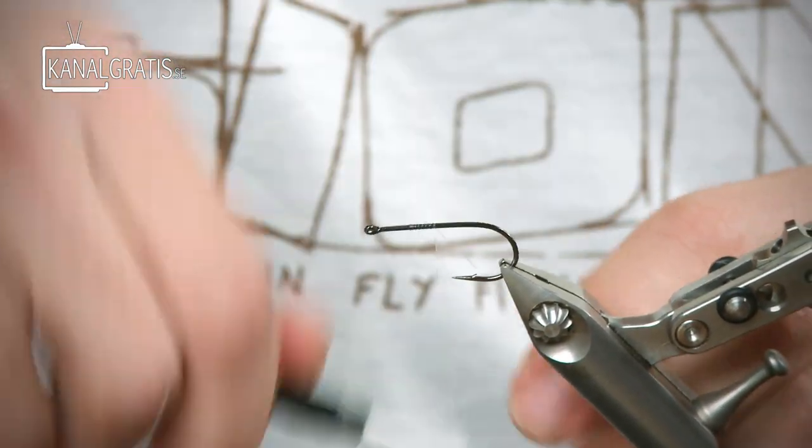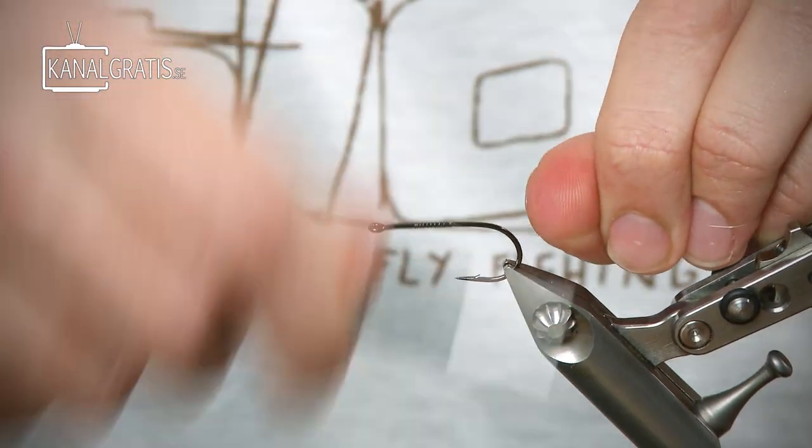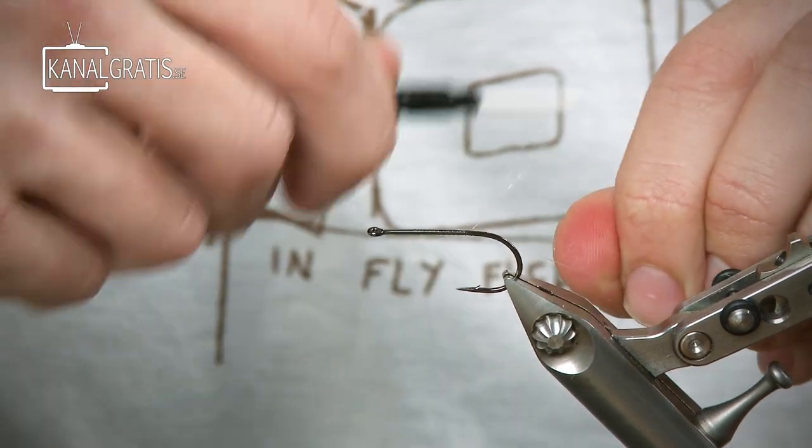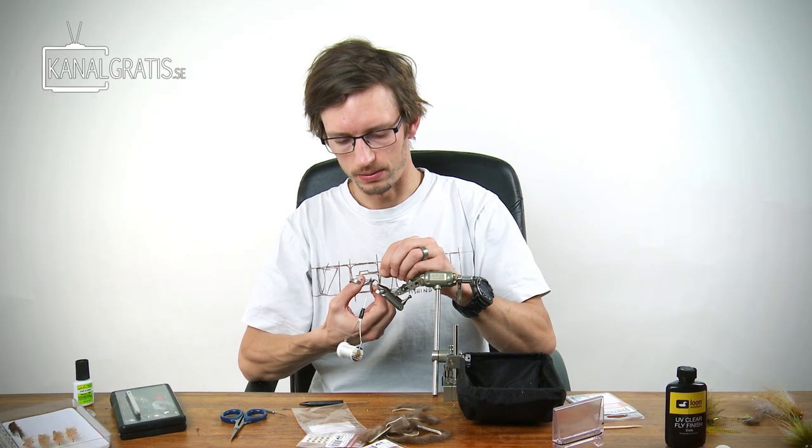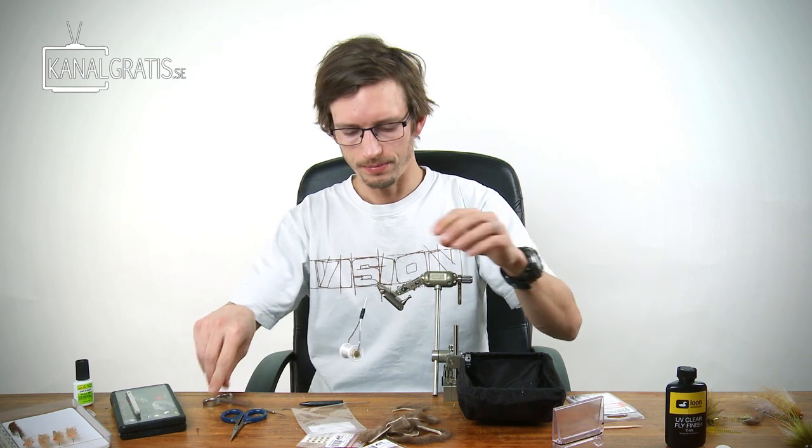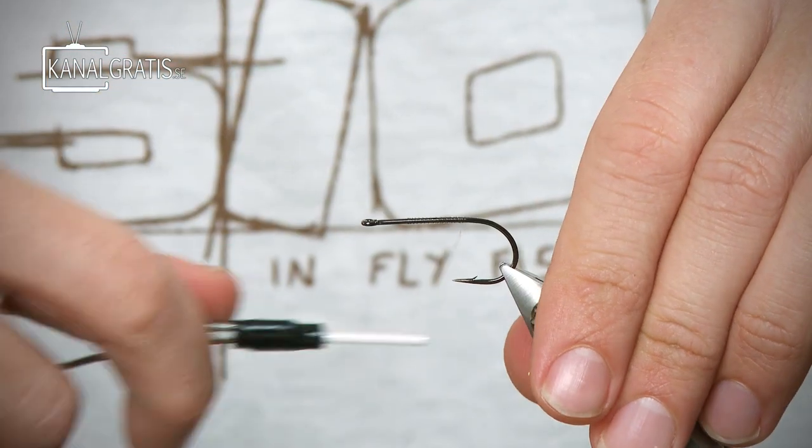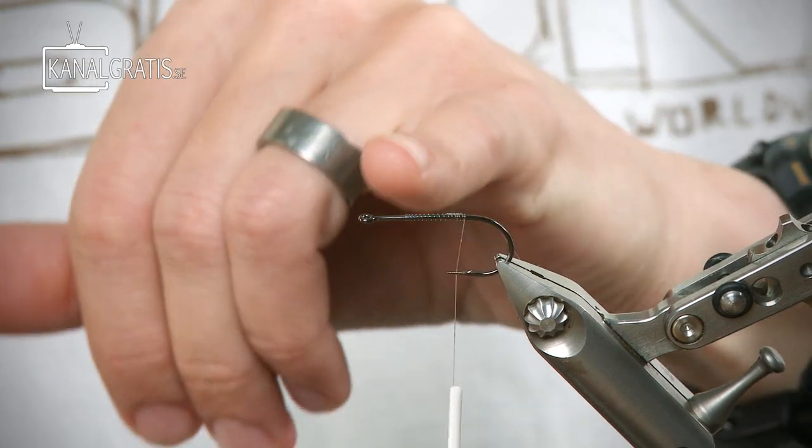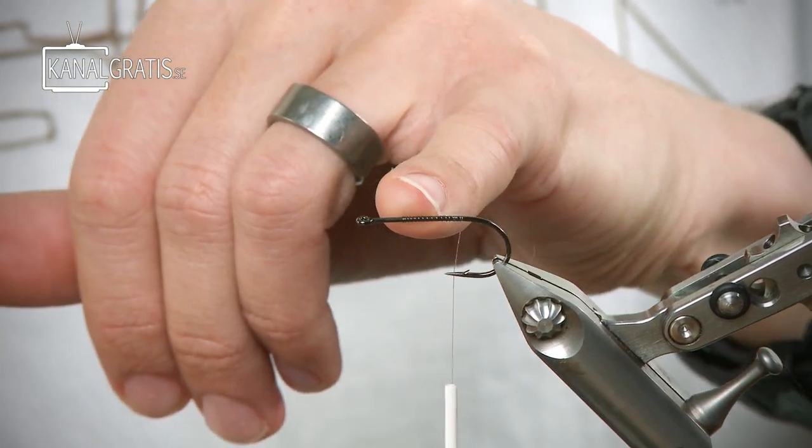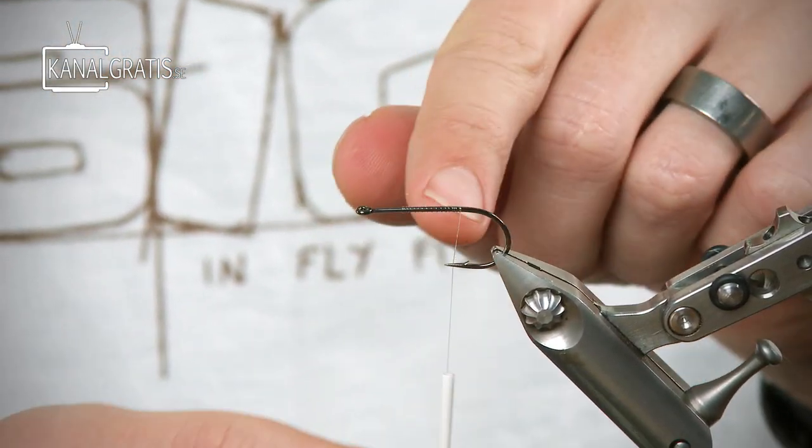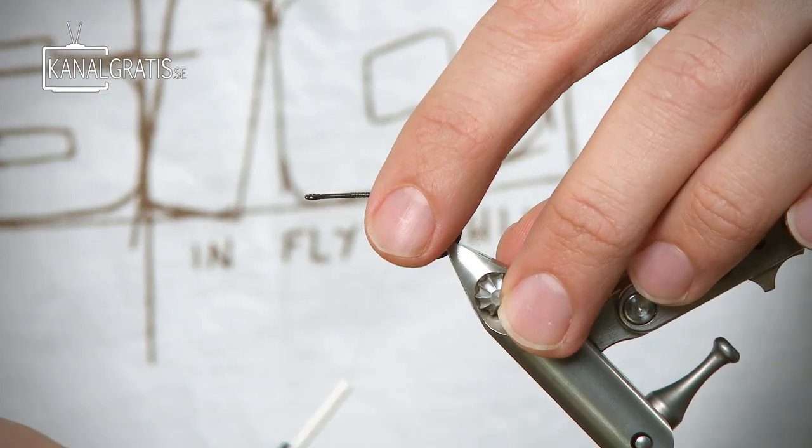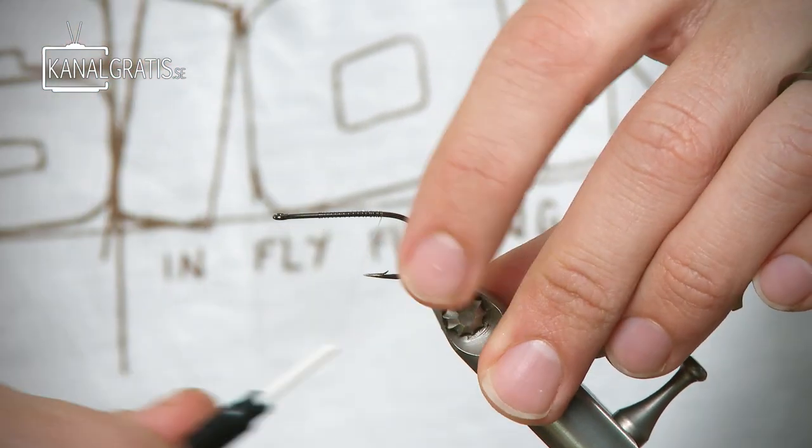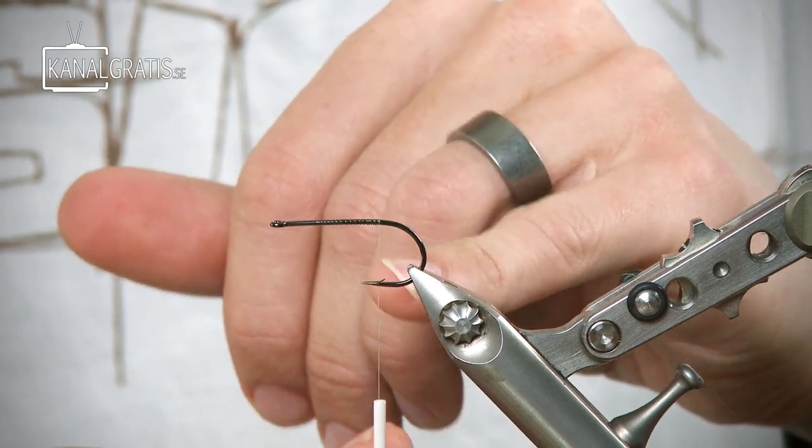Attach your tying thread to the hook. I'm using a clear tying thread, which makes it more or less invisible when you tie. Go all the way down to the hook bend. Don't go down in the hook bend, you want it to be on the shank of the hook. So that's just before the barb on this hook, or just about where the barb is.